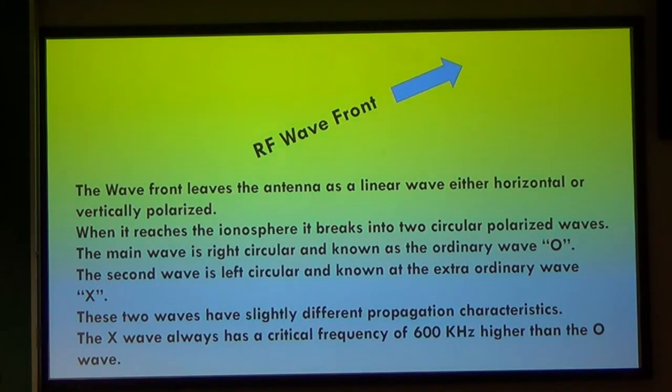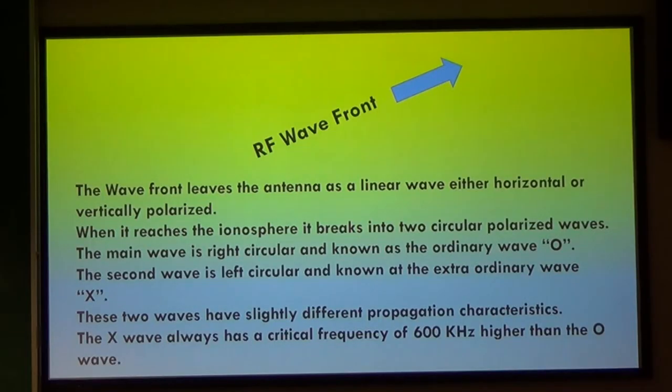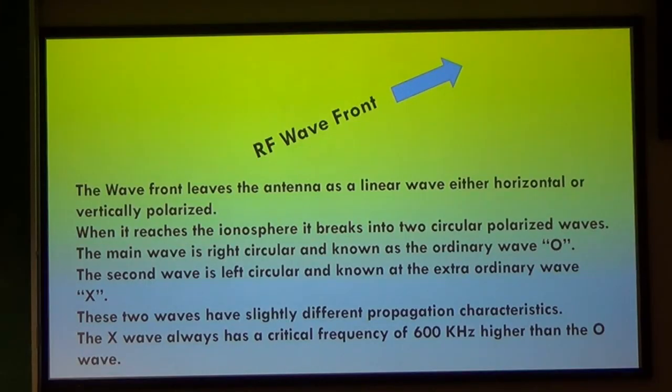The wave front leaves the antenna as a linear wave — either horizontally or vertically polarized; it doesn't matter for communication between A and B, and they can be cross-polarized. When it reaches the ionosphere, it breaks into two circularly polarized waves. The main wave is the ordinary wave, which is right-circular polarized. The second wave is left-circular polarized and is known as the extraordinary wave. Think of the vortexes coming off an airplane's wings — one clockwise, one counterclockwise. Most people think the wave goes into the ionosphere and comes right back out as-is, but it actually breaks into two waves.